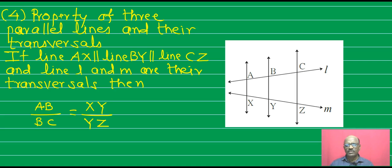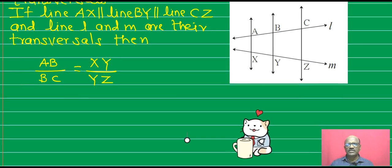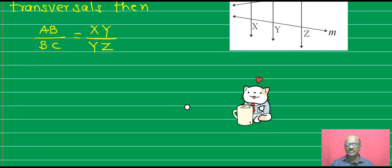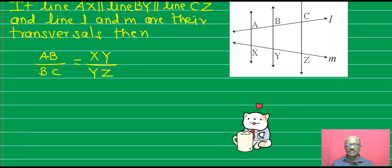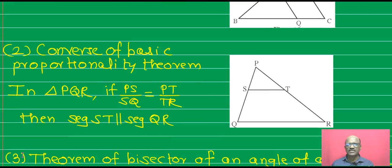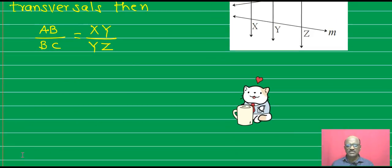These are the important formulas. After completion of these theorems, we will start practice set 1. Remember: Basic Proportionality Theorem, Angle Bisector Theorem, and Theorem of the Three Parallel Lines. Goodbye. Thank you.